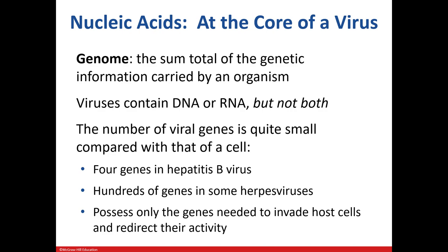The genome of a virus differs. Some have DNA while some have RNA as their nucleic acid. The viruses don't have a significant amount of genes. The hepatitis B virus only has 4 genes. Some herpes viruses have hundreds, compared to E. coli, which has about 4,000 genes, and us, who have 20,000. They have genes that they need to invade a host and take over their machinery.